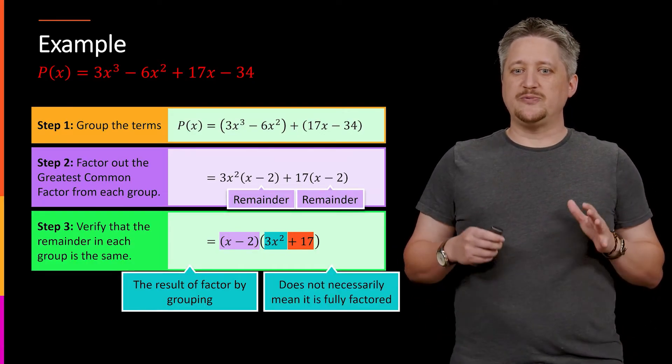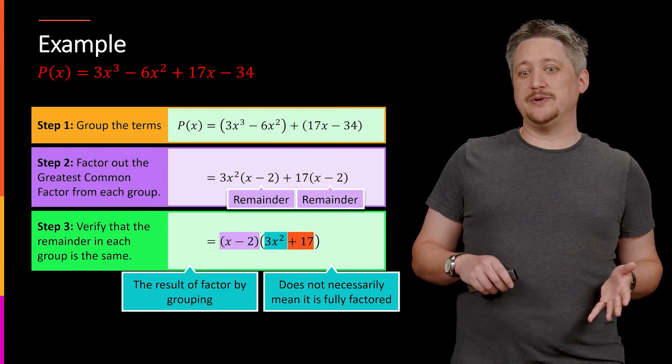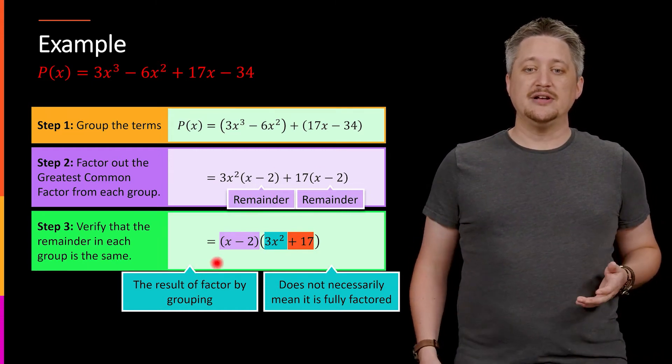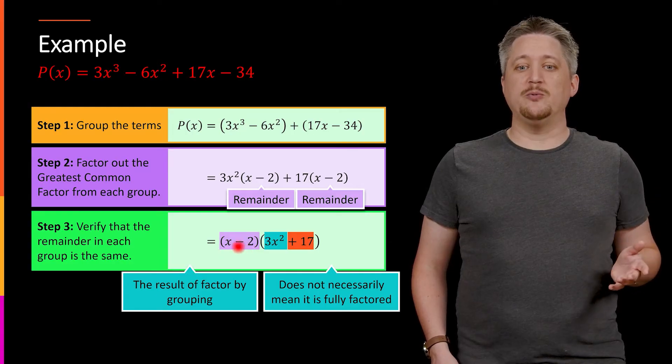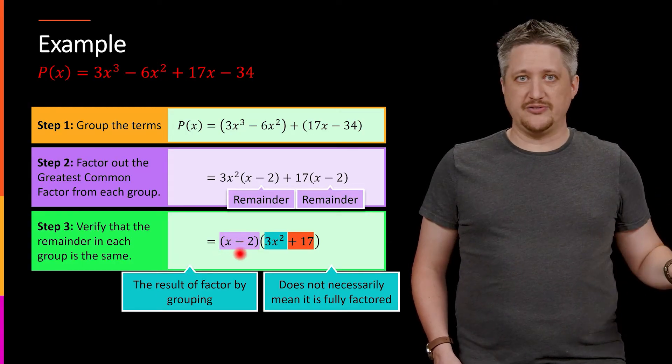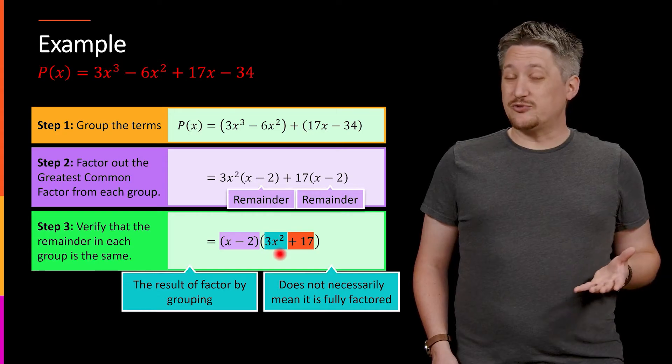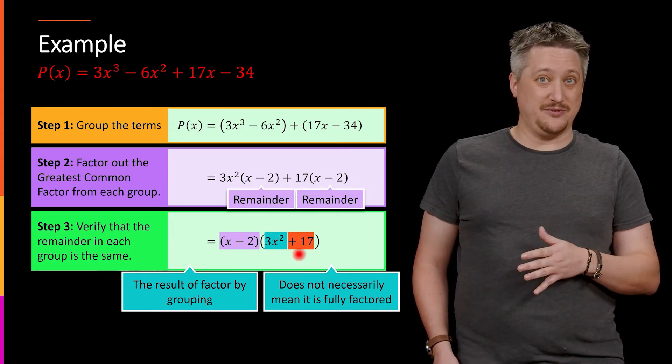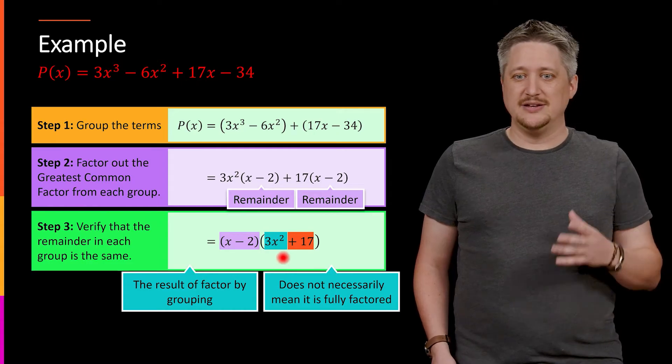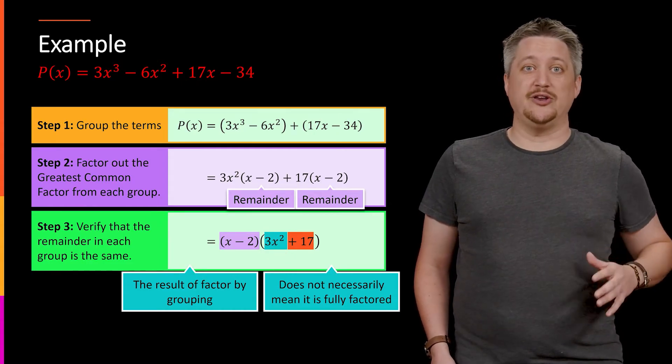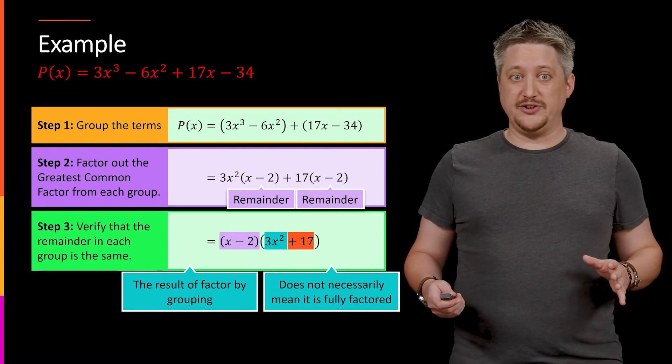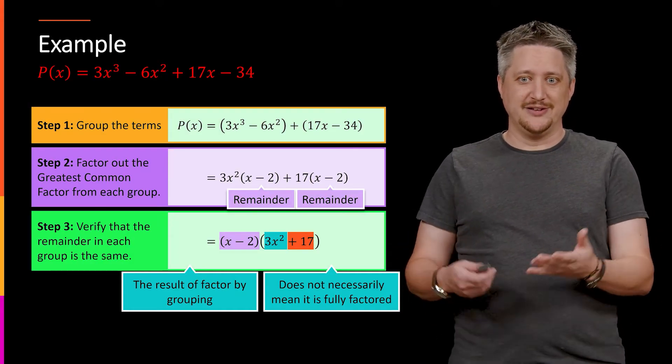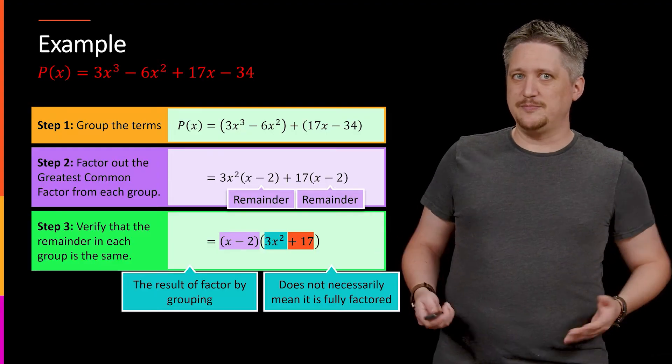But to be very clear, just because you've succeeded at the factor by grouping does not necessarily mean you are fully factored. If you remember, linear terms, terms of degree one, like this x minus 2, are always factored fully. We don't have to look at that. But if you have a square term, that might be fully factored, it might not be fully factored. You have to actually check. As it turns out, in this case, this one is fully factored. So I would be done if my goal was to fully factor. If my goal is just to factor by grouping, it doesn't really matter if that's done, because I've done the grouping step.